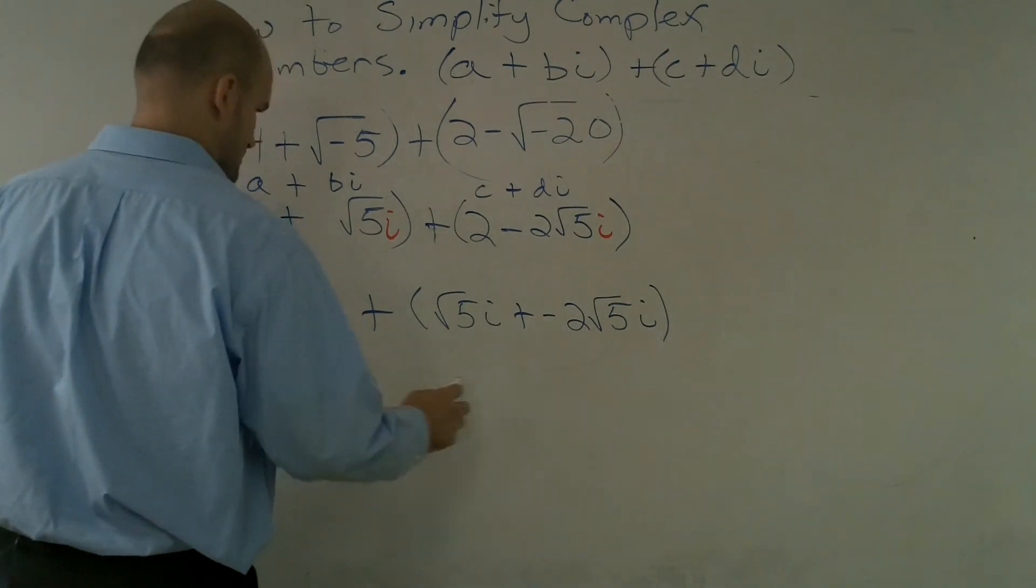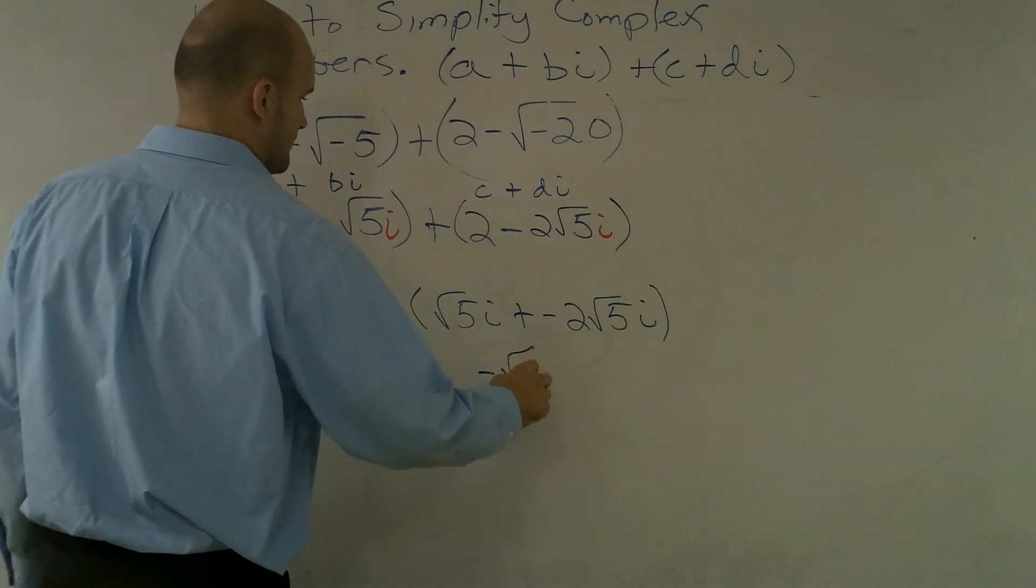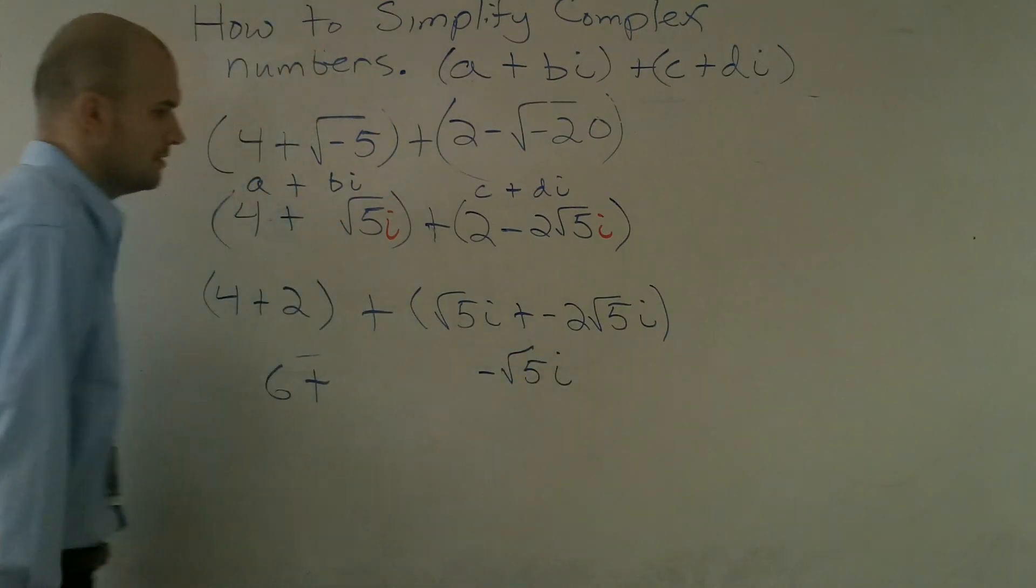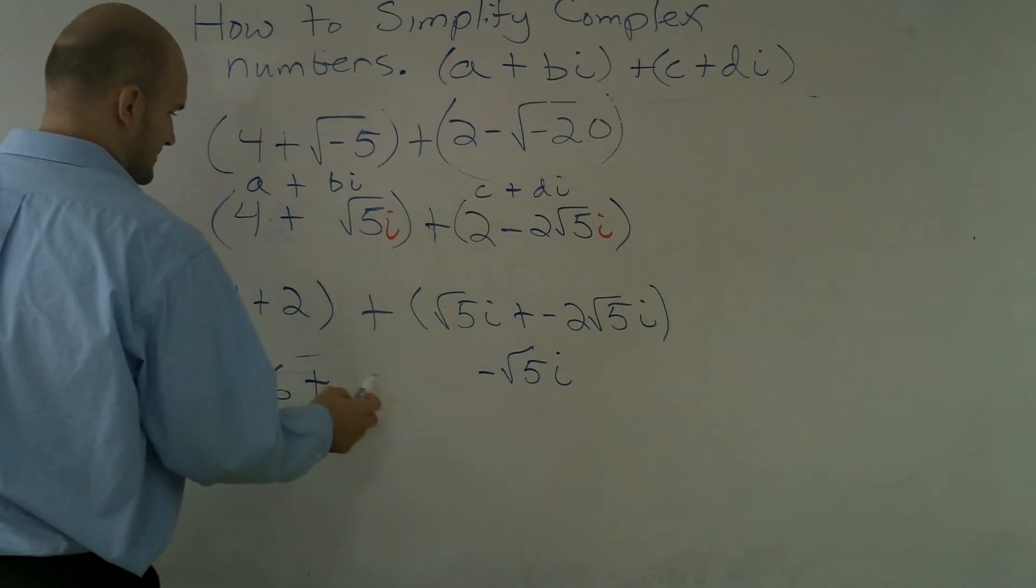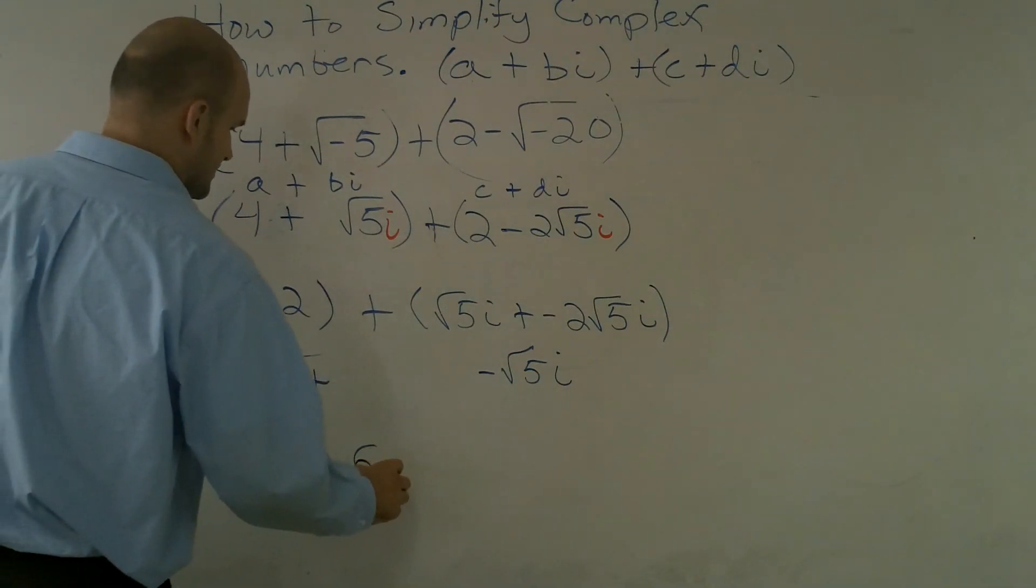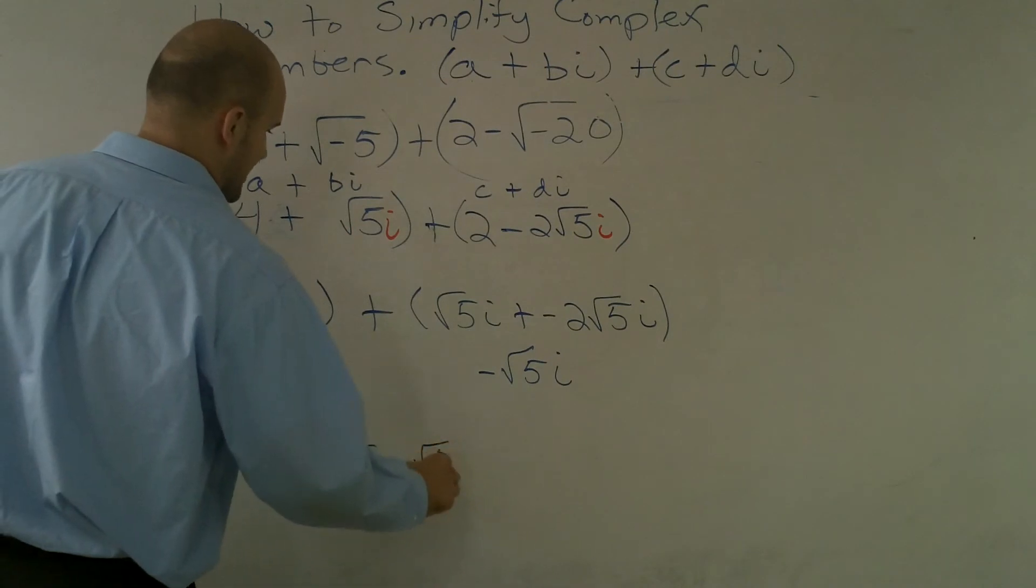That's going to give you a negative √5i. So my final answer becomes 6 - √5i.